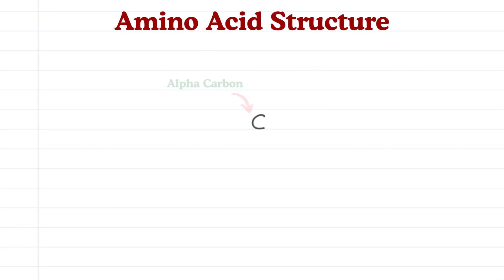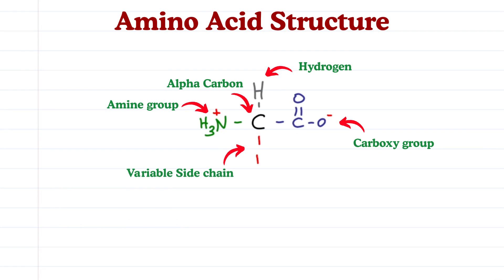Amino acids contain an alpha carbon, a hydrogen, a carboxy group and an amine, we'll use the zwitterion for both, and a variable side chain R.